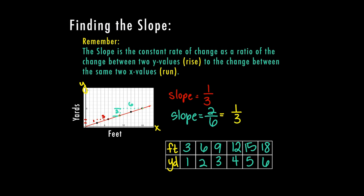So it doesn't really matter which two points you choose, you want to reduce your slope down to the smallest possible. And you're going to end up with a slope of one to three. So that means for every yard, since that's what my y represented, I'm going to have three feet.